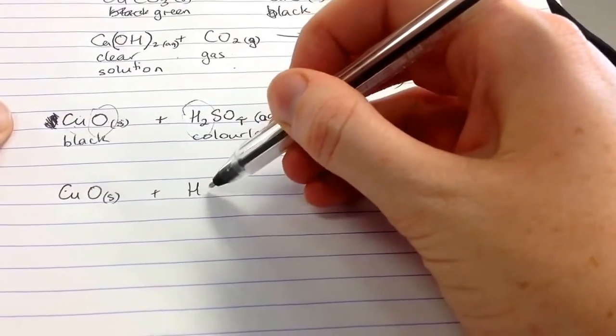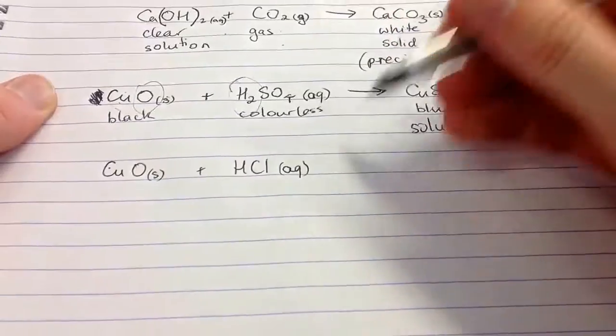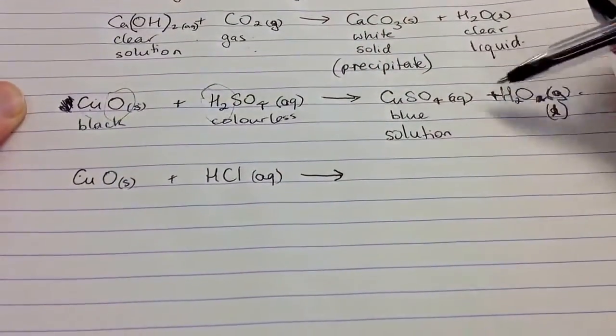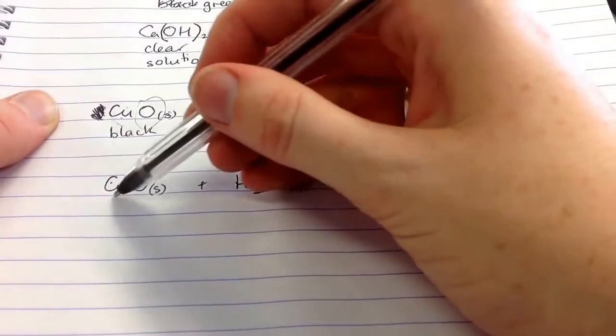The other one we saw was we had copper oxide. And we used hydrochloric acid. And that was, again, aqueous. In that case, we didn't form copper sulfate. Instead, the chloride ion joined with the copper.